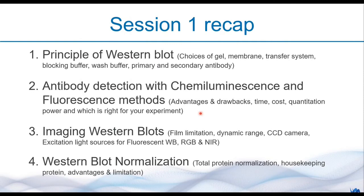Let us recap what we learned in the previous session. Firstly, we went through the principles of Western blot — the choice of gel, membrane, buffer, transfer system, blocking buffer, wash buffer, and the considerations for picking your primary and secondary antibodies. Next, we looked into the two big categories of antibody detection: chemiluminescence and fluorescence methods. We discussed the advantages and drawbacks, time, cost, and quantitation power of each, and which is right for your experiment.